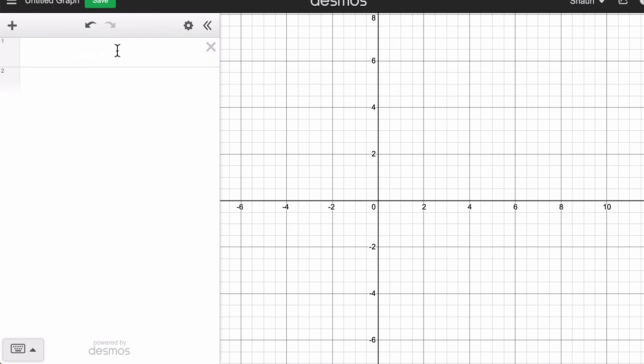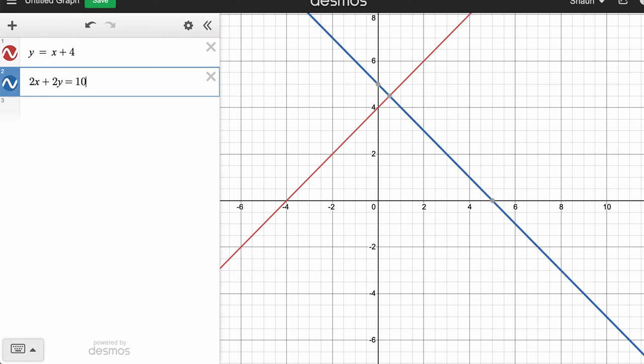So clear off these equations. y equals x plus 4. There's our first equation. 2x plus 2y equals 10. There's our second equation. And there is where they meet.